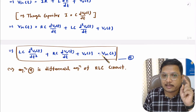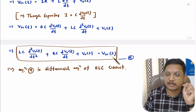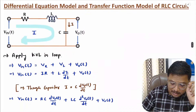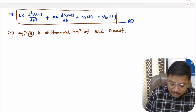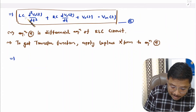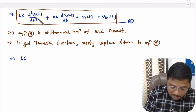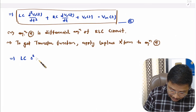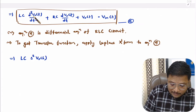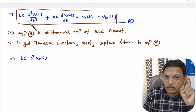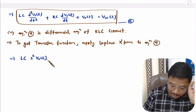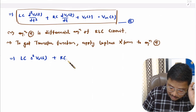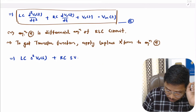Now I will derive the transfer function. To derive the transfer function, I need to apply the Laplace transform to this differential equation. We are considering zero initial conditions for R, L, and C. Applying Laplace transform to equation A: LC is a constant and double differentiation becomes S² times V_out(S). RC is constant and single differentiation becomes S times V_out(S), with initial conditions ignored due to zero initial conditions.